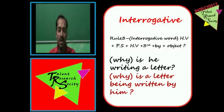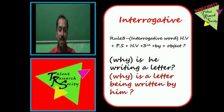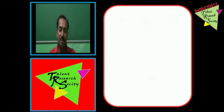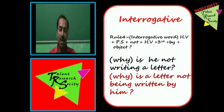Rule 3: Interrogative word + helping word + PAS + helping word + third form + by + object. Example: 'Why is he writing a letter?' — present continuous mein hai. Passive banate samay helping word 'being' aayega. Sentence: 'Why is a letter being written by him?'